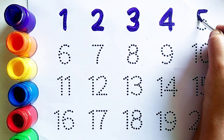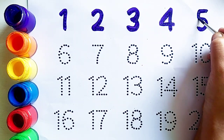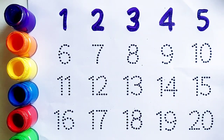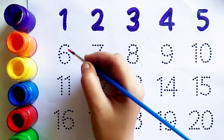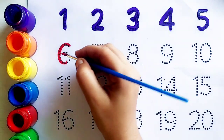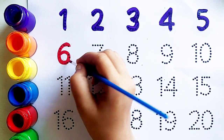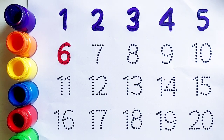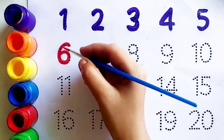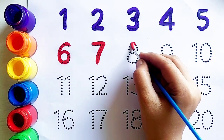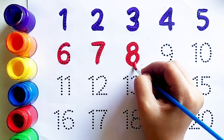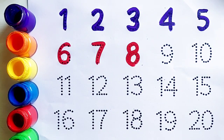Four के बाद आता है number five. ये है number five. Five के बाद आता है number six. Number six. ये क्या है बच्चों? ये है number six. Number six के बाद आता है number seven. Number seven. Seven के बाद आता है number eight.